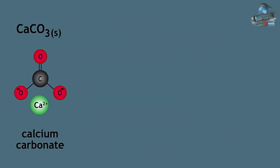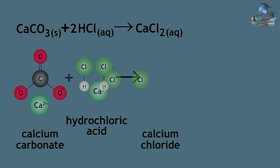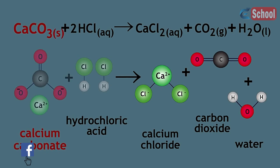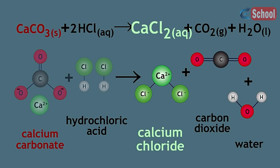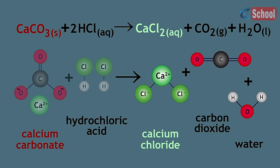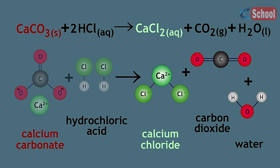Calcium carbonate reacts with hydrochloric acid to give calcium chloride, carbon dioxide, and water. So calcium carbonate appears to dissolve, but calcium chloride has been formed and it is soluble in water. Note that in this reaction and in the acid rain example, calcium carbonate reacted with acid to give carbon dioxide and water.